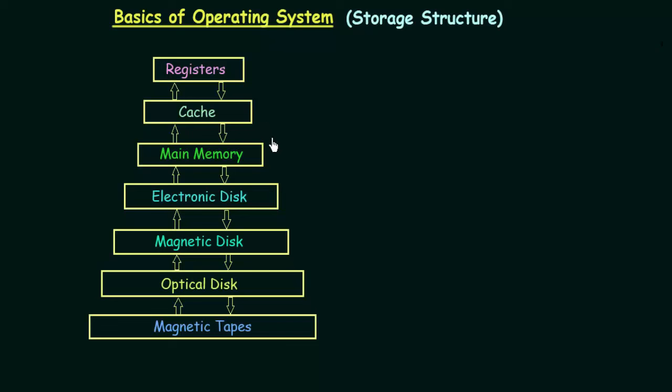After cache we have our main memory, which is very important. Examples of main memory are your Random Access Memory or RAM, which will be discussed in detail. Then we have electronic disk, magnetic disk, optical disk, and magnetic tapes — these are the secondary storage devices.